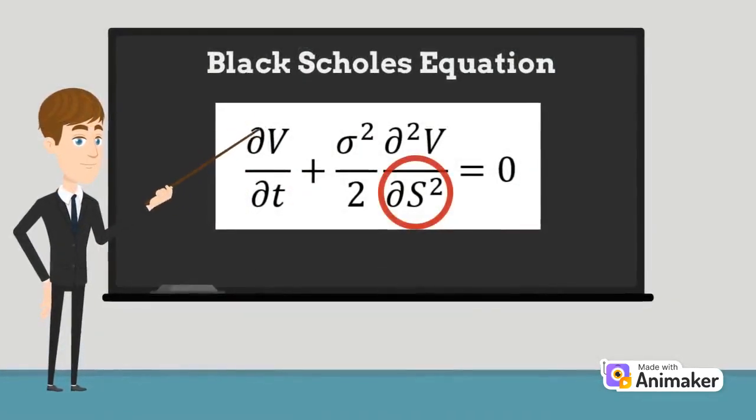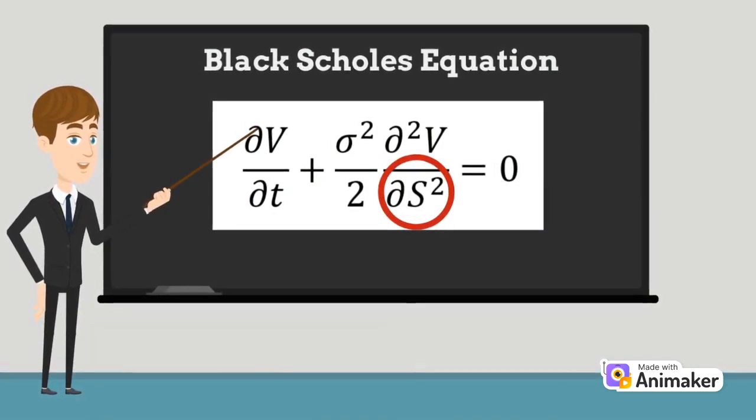The variable s is simply the current stock price of the underlying asset.